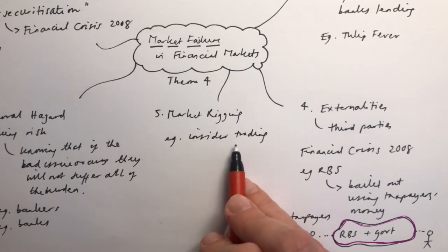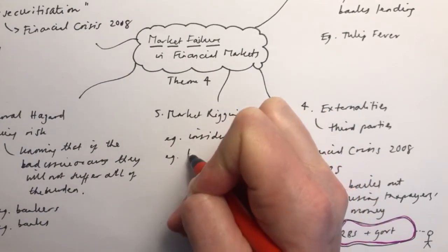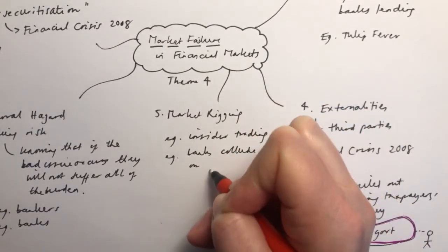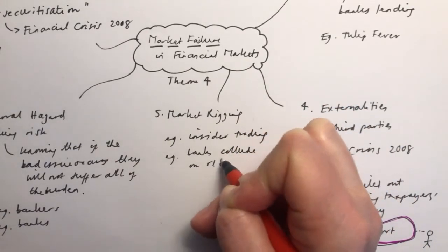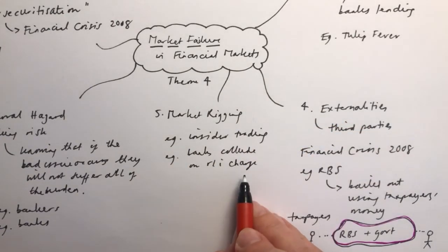They've got knowledge that nobody else has got. And this can also happen, for example, if banks collude on the rate of interest they charge on loans. They can collude and get together so that they are all charging a similar rate of interest, and in this case it will be consumers or firms that would be damaged by this because the market would no longer be competitive.